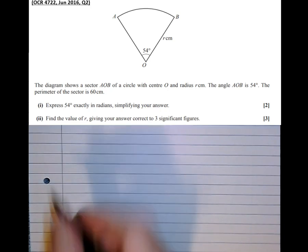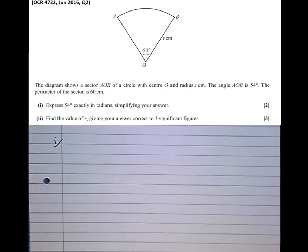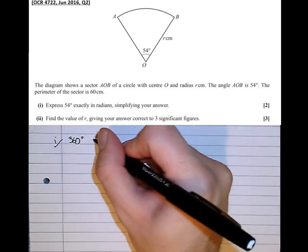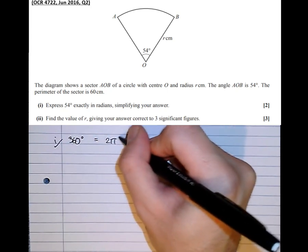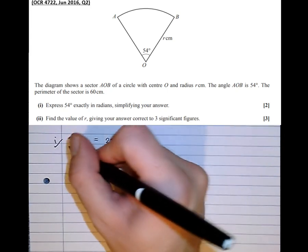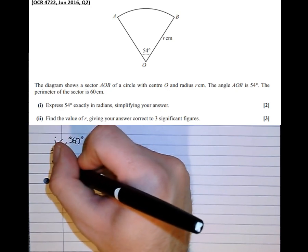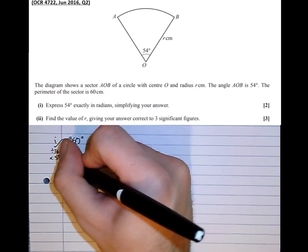Express 54 degrees exactly in radians. Using the method we've previously learned, 360 degrees is equivalent to 2π radians. And we want 54 degrees, so we want to divide by 360 to get 1 degree, then times by 54.